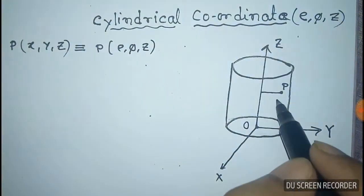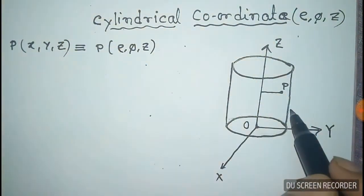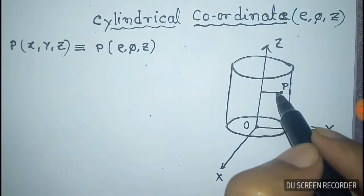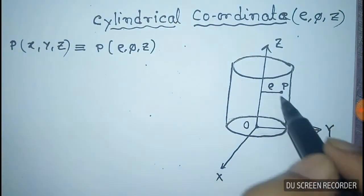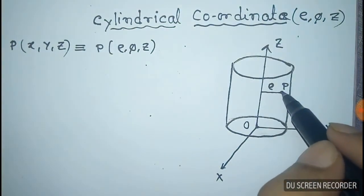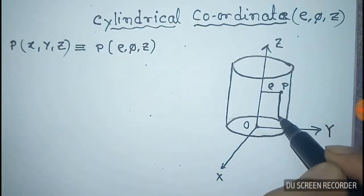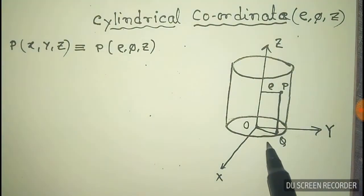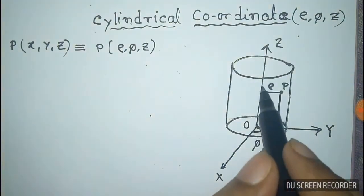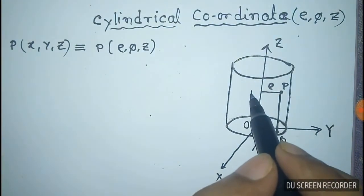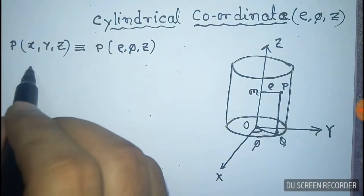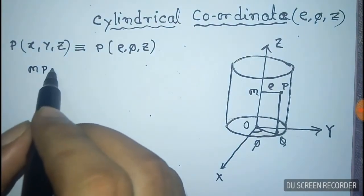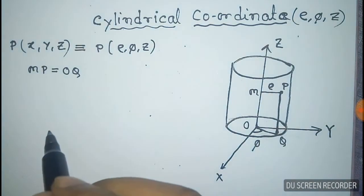Now this radius of the cylinder is rho. Now we have a projection of P on the XY plane that's Q, and join it OQ. Now the angle between OQ and X axis is phi, and if this is M, then the distance MP is equal to OQ, both are equal to rho.